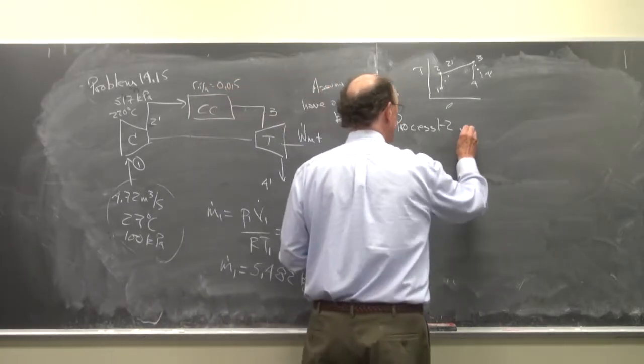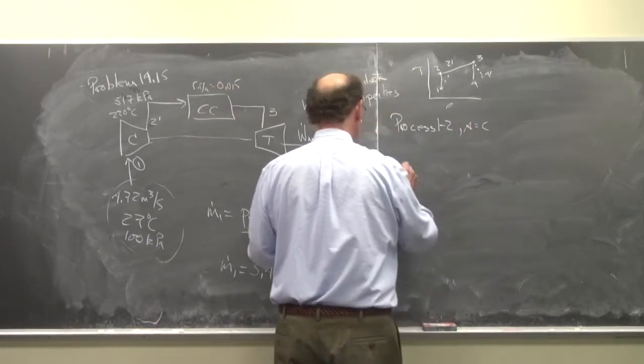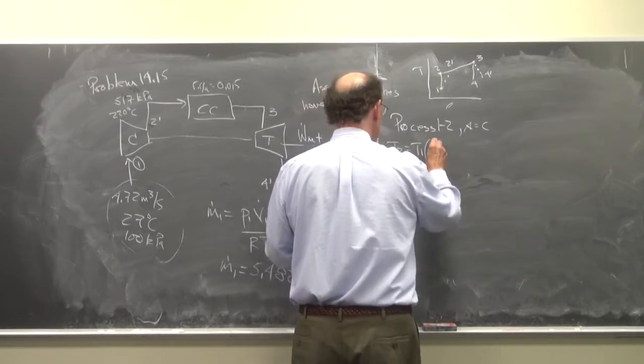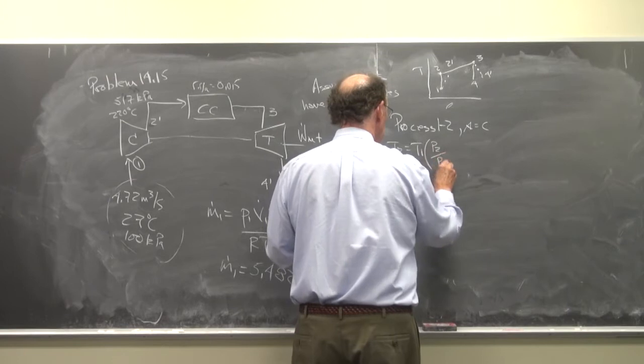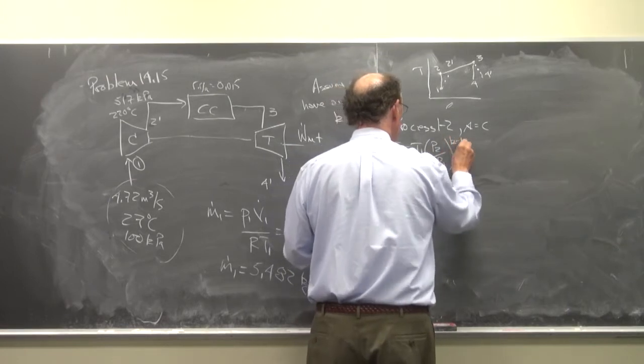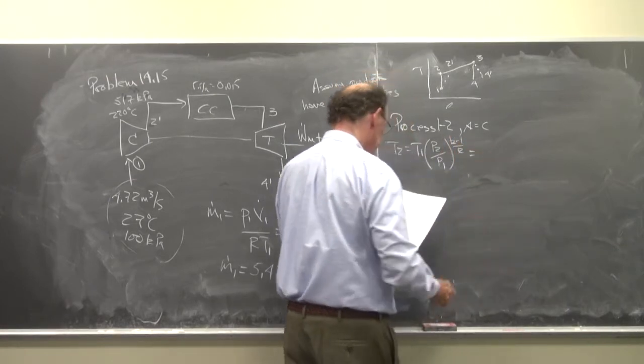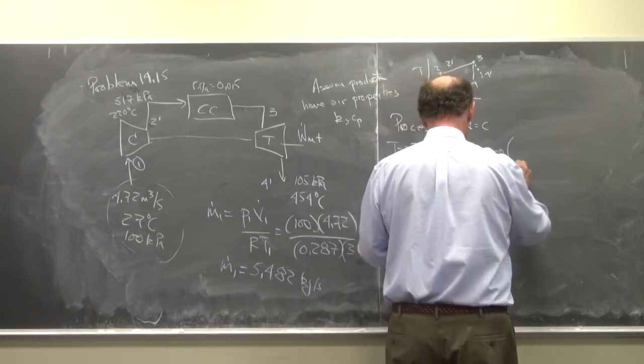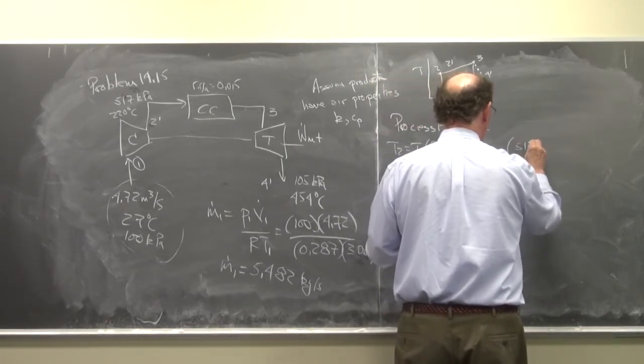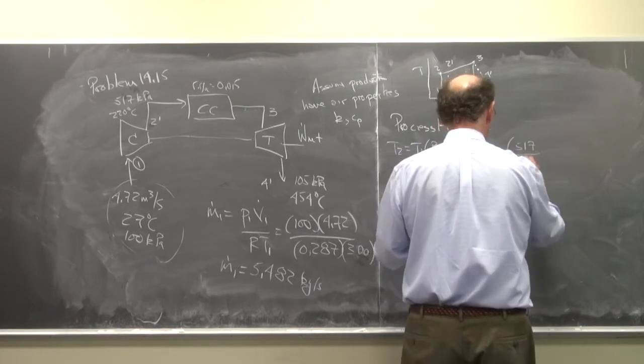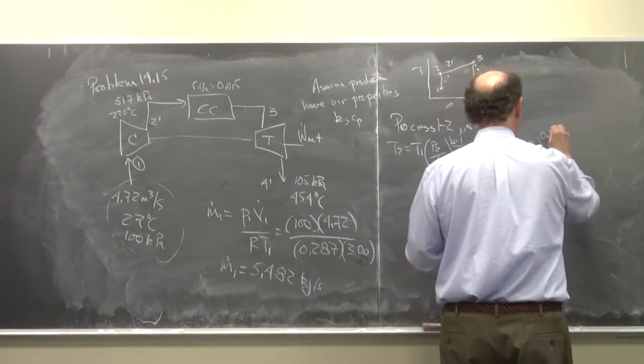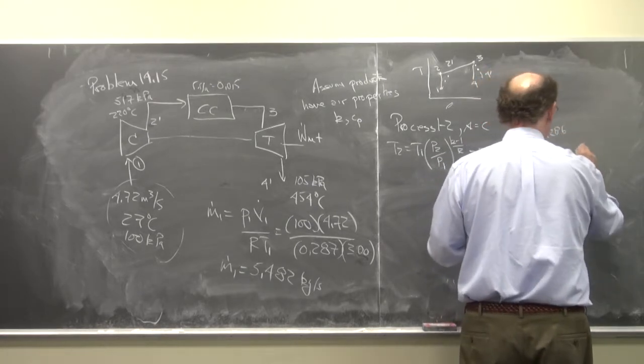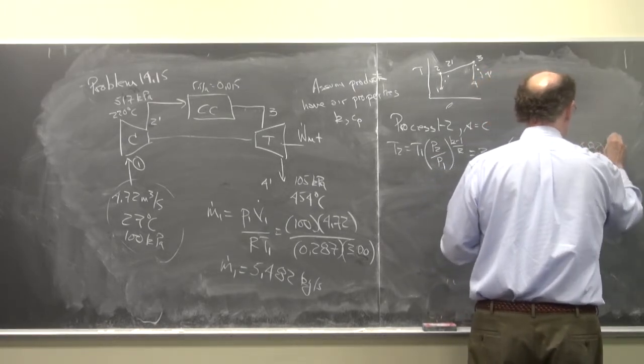So the process 1 to 2, S equals C. So we have T2 is equal to T1 times P2 over P1 to the K minus 1 over K. We weren't given Rp in this case, but we have that this is 300 times 517 over 100, and this is 0.286. So this is 480 degrees K.